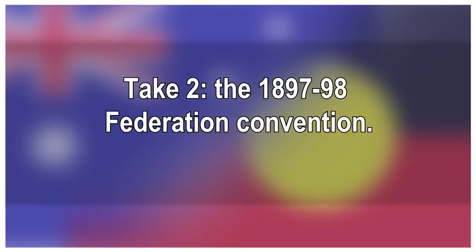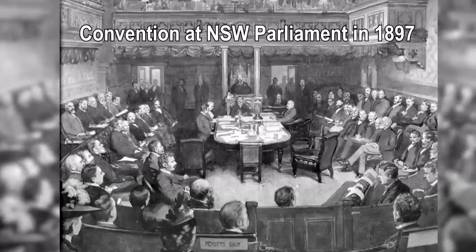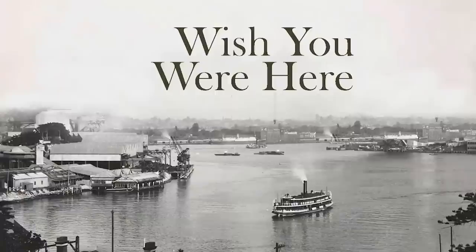So take two: the 1897-98 Federation Convention. Elected and appointed representatives from the colonies, except for Queensland, met between 1897 and 1898 — first in Adelaide, then in Sydney, and finally Melbourne. Fiji and New Zealand at this point had decided that this wasn't for them. They'd never really been super enthusiastic to begin with and being super far away made the idea difficult. Fiji and New Zealand were more likely to federate together into one country — though spoilers, they didn't do that either.